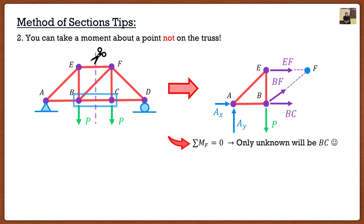Here are some general tips about trusses for the exam. If the question asks for all the forces in the members, that's hinting you should use the method of joints — go through each joint, do particle equilibrium, solve for all forces. If the question asks for forces in certain specific members only, that's a hint to use the method of sections. On exams, they very rarely tell you which method to use — they'll just say 'solve for this.' It'll be up to you to figure out which method works best. If you want all the forces: method of joints. If you only want some of the forces: method of sections.